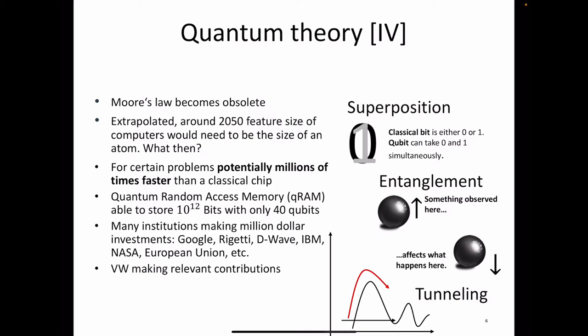Quantum internet is a different story — so that our communication is again secure. Many institutions make million and even billion dollar investments, such as Google, Rigetti, D-Wave, IBM, NASA, the European Union, Microsoft, and companies such as Volkswagen are making relevant contributions. Now is the time to really start thinking about quantum computing in industry, think about the use cases, solve scaled-down versions of the problems we see in industry, and be ready when we have chips powerful enough to solve these problems at an industrial scale.